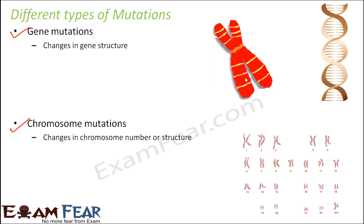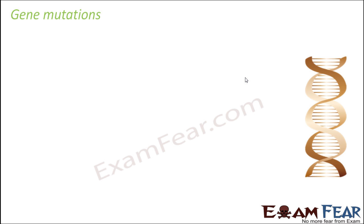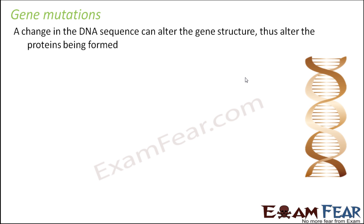Now we will talk about each of these mutations one by one, starting with gene mutations. In gene mutation, a change in the DNA sequence can alter the gene structure. The structure of the gene is made up of nucleic acids — made up of DNA. Anything which changes the sequence of the DNA structure will alter the gene structure, which alters the proteins being formed, because the sequence of bases on the DNA gives instructions for the protein to be synthesized. How exactly that process happens will be discussed in the next lesson.